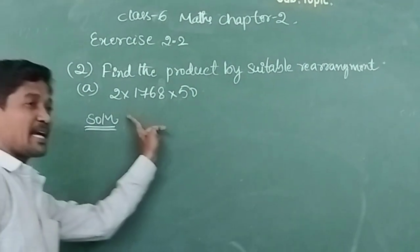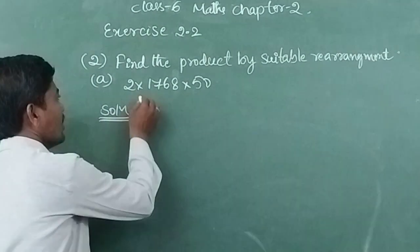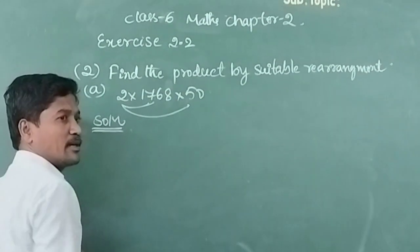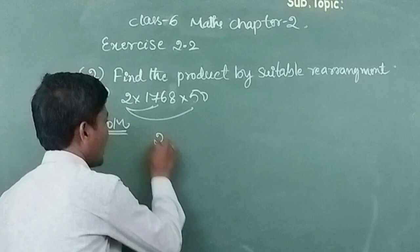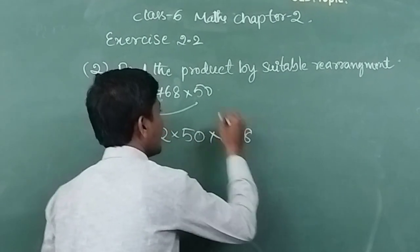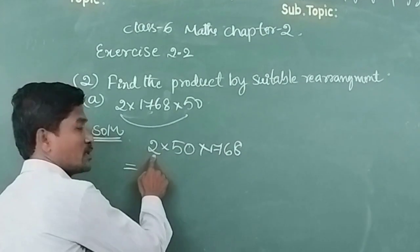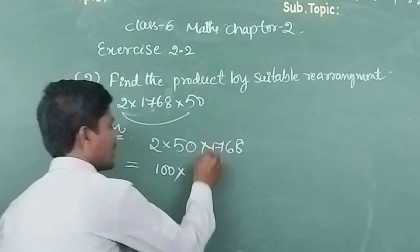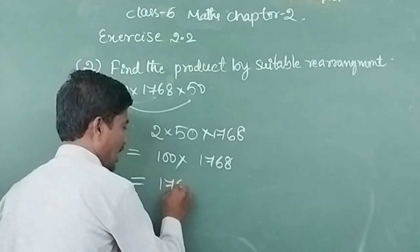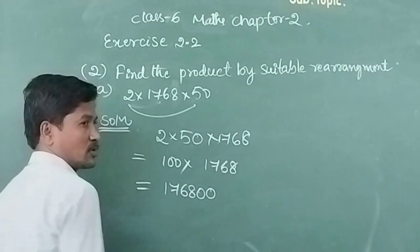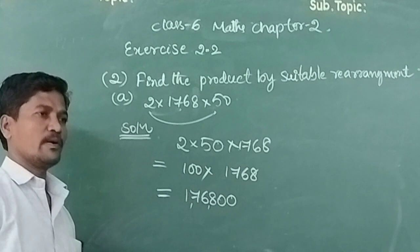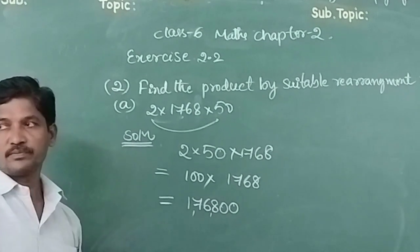Which number product will become 100 now? First we have to rearrange that. Now see here. These two become 100. So I will rearrange this in the form of 2 into 50 into 1768. Check it. 2×50 is 100. 100 into 1768. Now, 1 into 1768 is 1768. Then how many zeros? 2 zeros. Then what is the answer? One lakh 76,800.